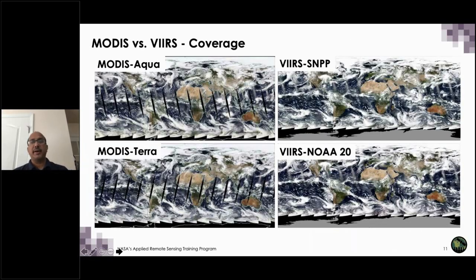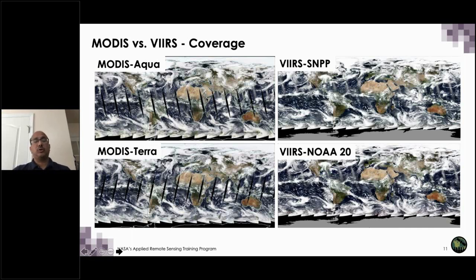Let's look at some similarities and differences in terms of coverage. On the left you have two MODIS — Aqua on top making measurements in the afternoon, Terra on the bottom making measurements in the morning. The black lines in the middle of the swath are called orbital gaps, caused by MODIS's swath width of 2,330 kilometers. At the equator, that swath width produces orbital gaps from one orbit to another, and we lose data in those gaps. So MODIS daily coverage is really one to two days.